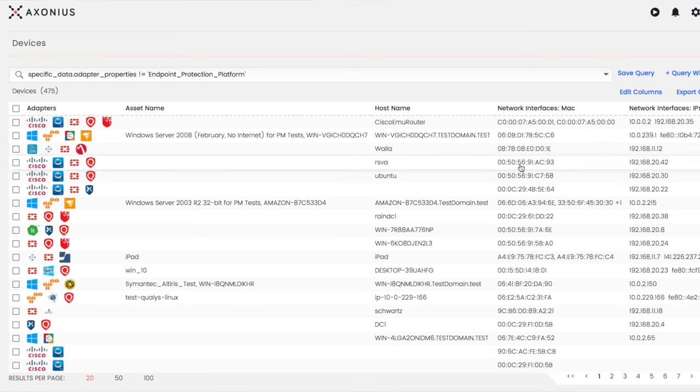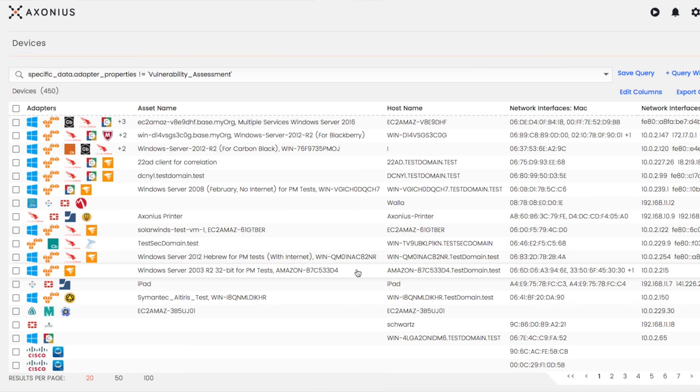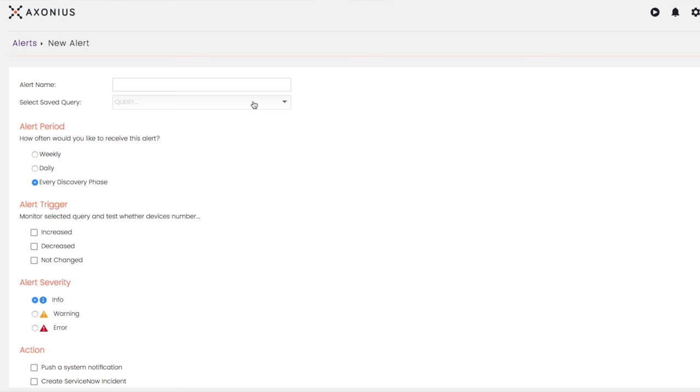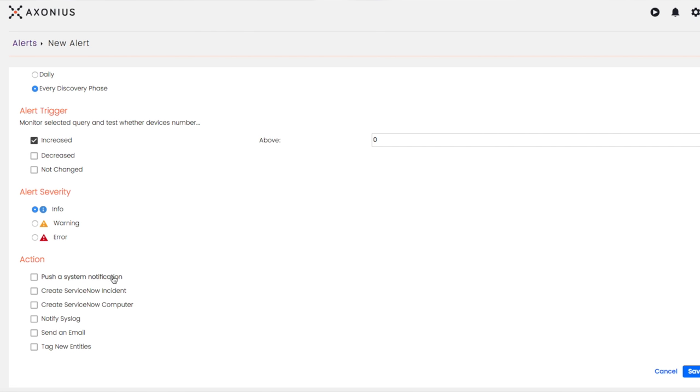By always knowing which devices and users don't have the required EDR or are unknown to vulnerability scanners, the Exonius platform can notify security teams to take action and in many cases can automate the steps necessary to ensure proper coverage.